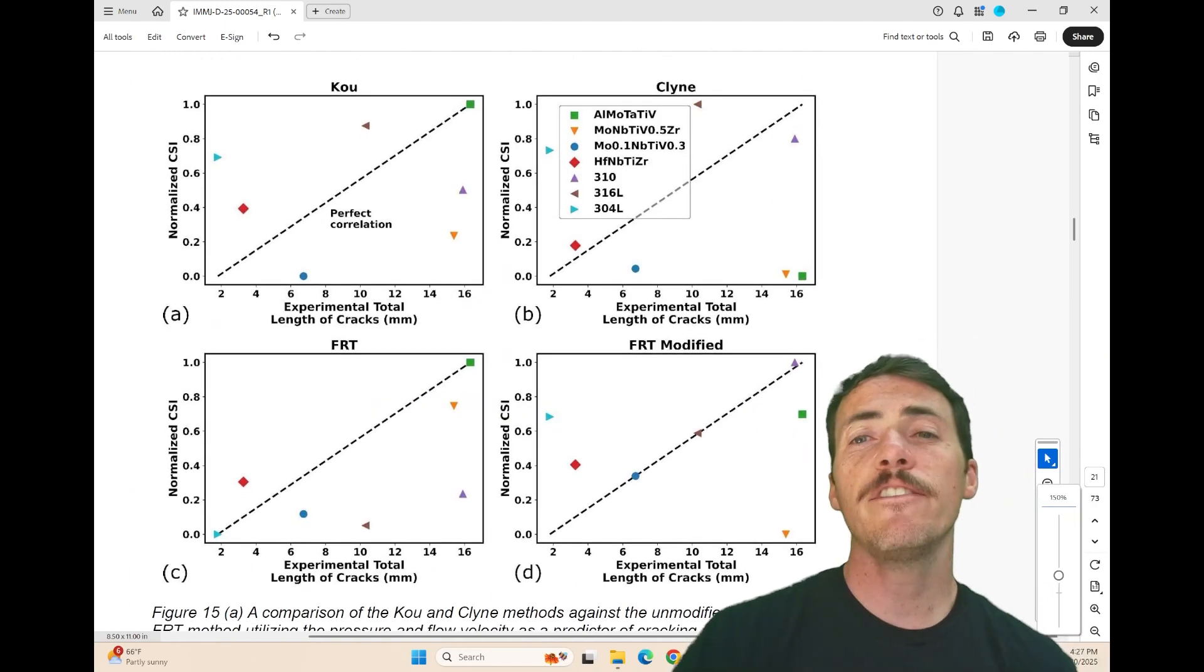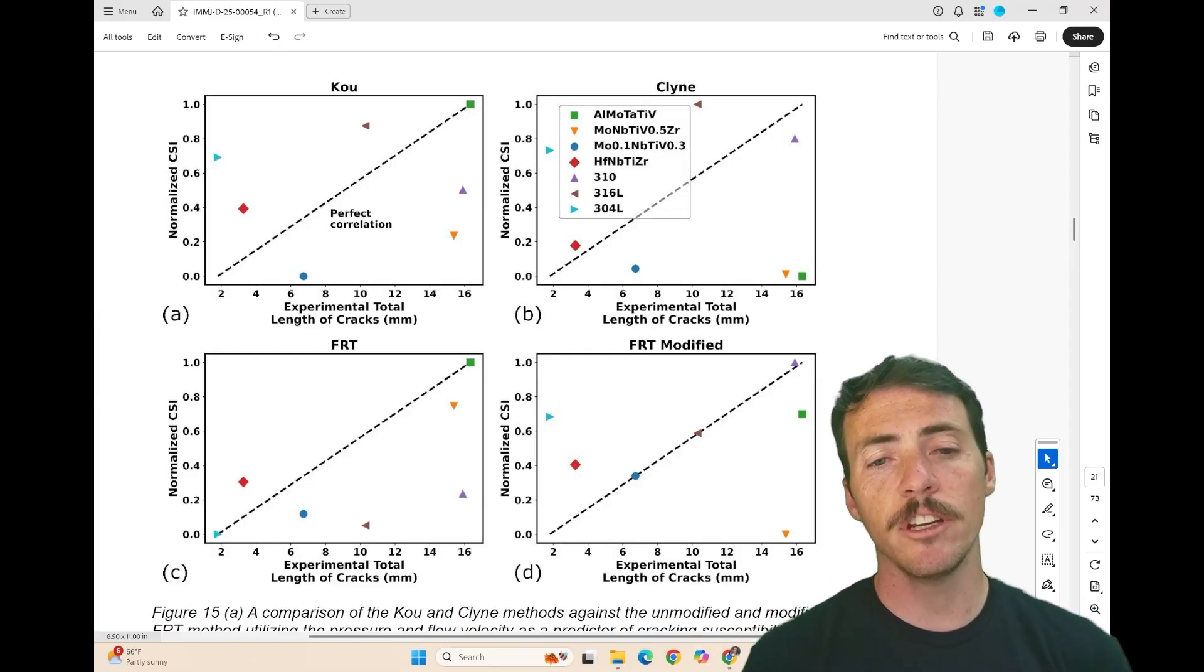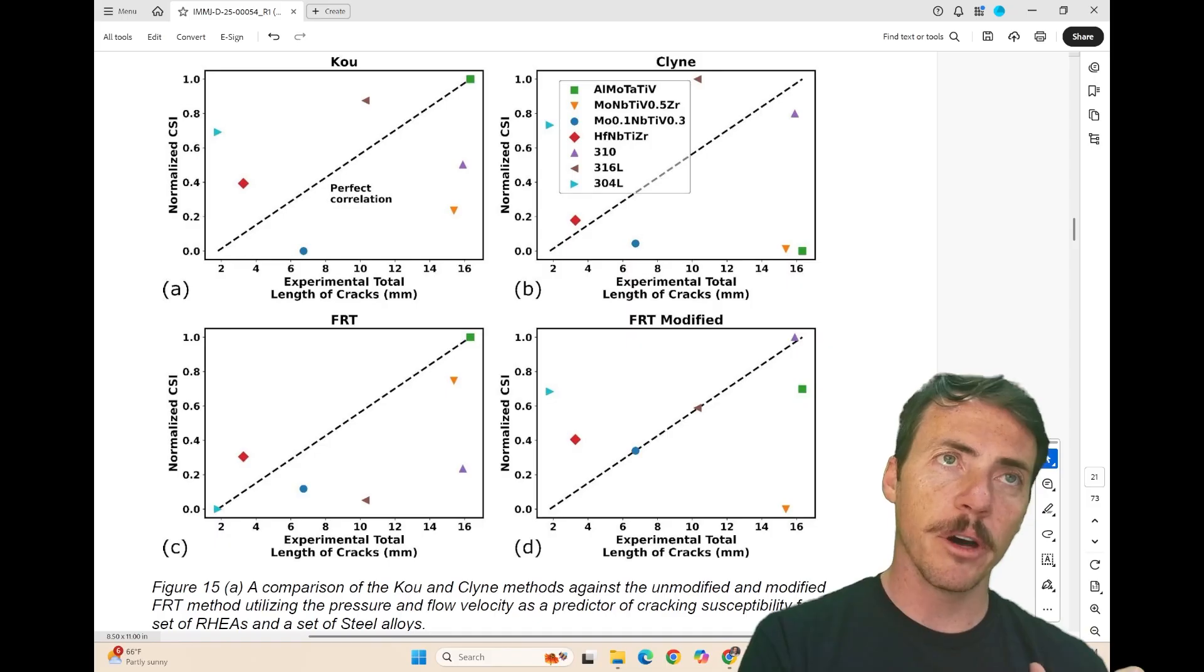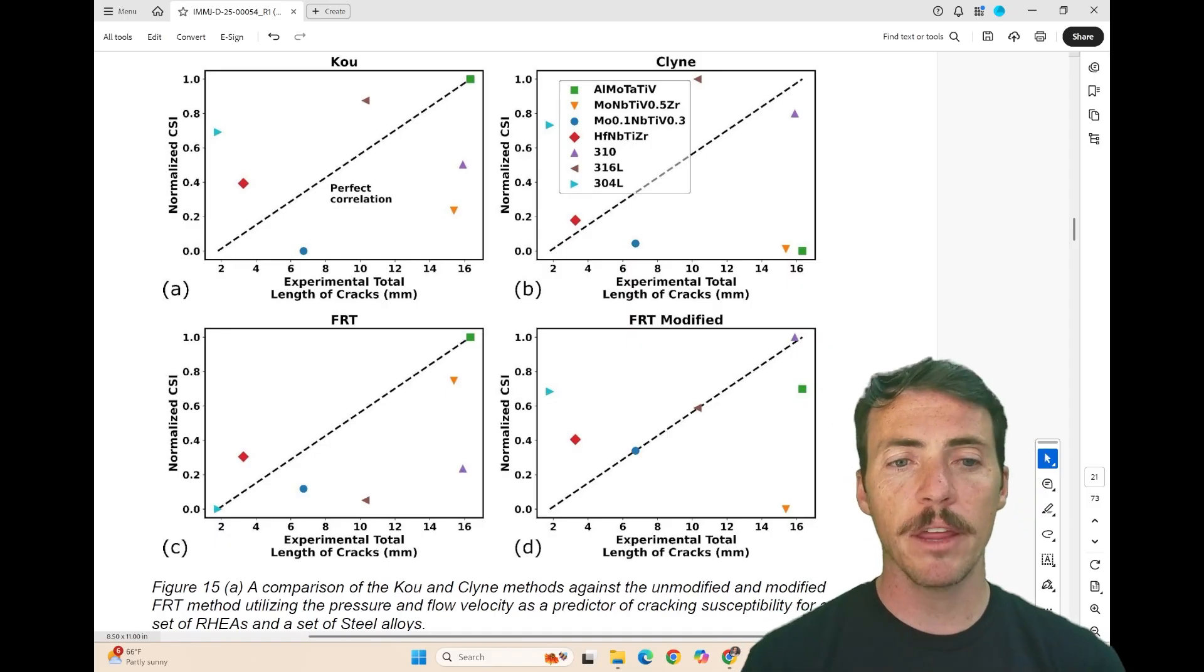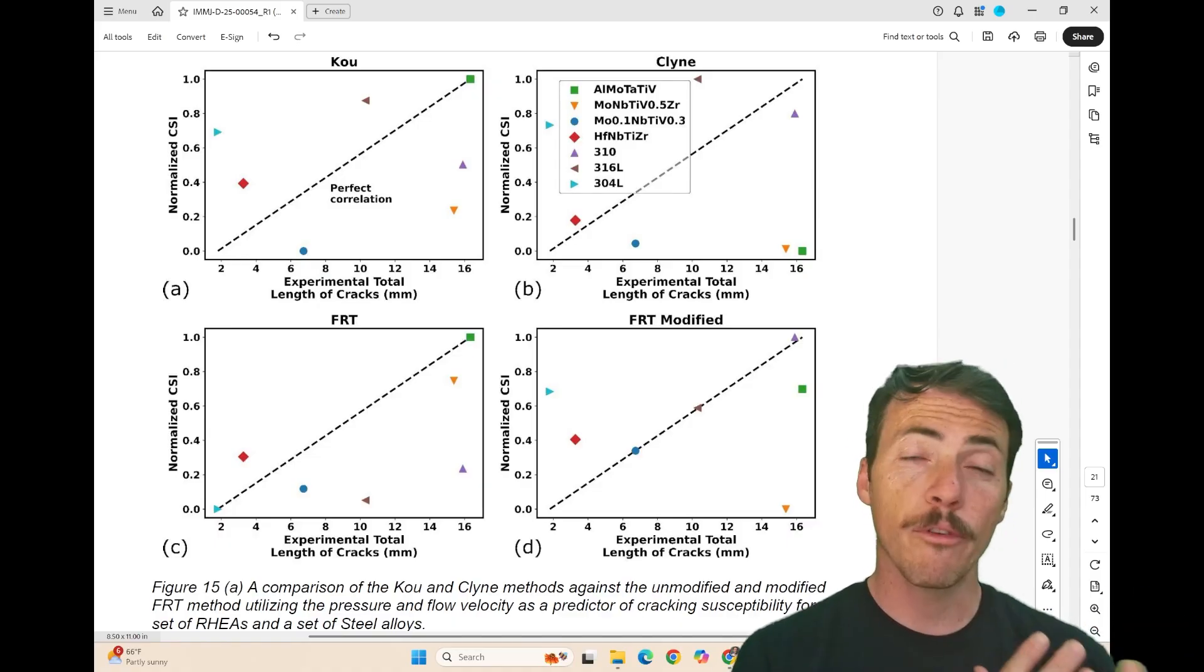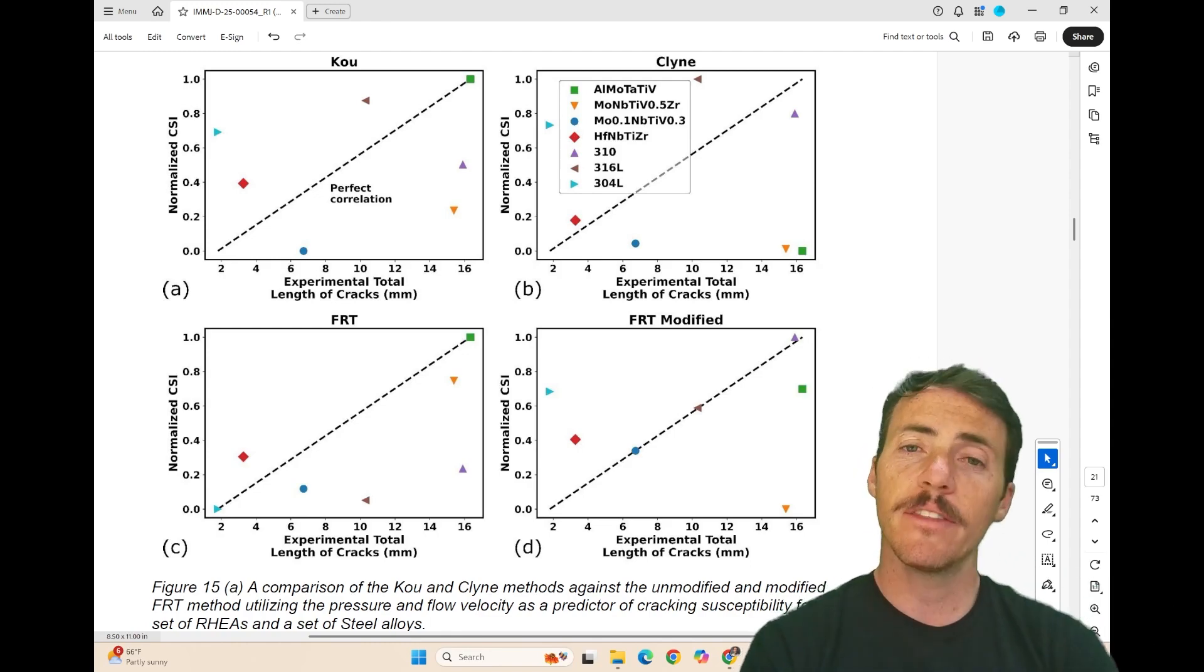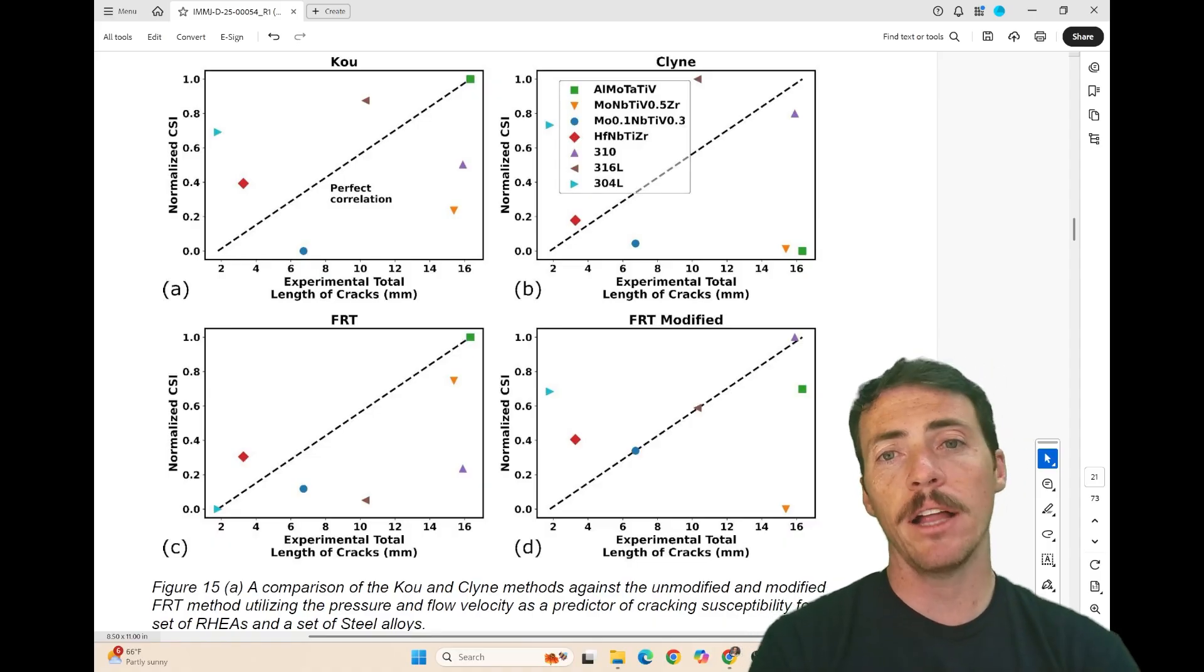And their key finding is shown in this figure 15, where they're showing now a comparison of the Coe and the Klein methods against the unmodified and the modified FRT method for utilizing pressure and flow velocity as a predictor of crack susceptibility for both refractory high-entropy alloys as well as steels. And basically what they show is that there's not one model that works perfectly for everything. They show that the FRT model tends to do better on steels, but this modified FRT1 tends to do a bit better on the refractory high-entropy alloys.